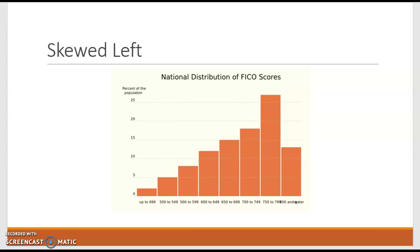Now, something is skewed left. This is also unimodal, because we have one high point. So we are unimodal, we are skewed left. This is how I remember this, because sometimes it's difficult.